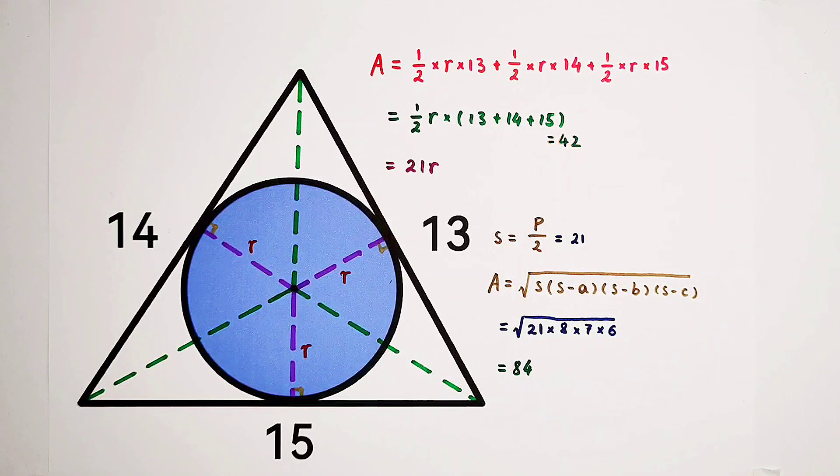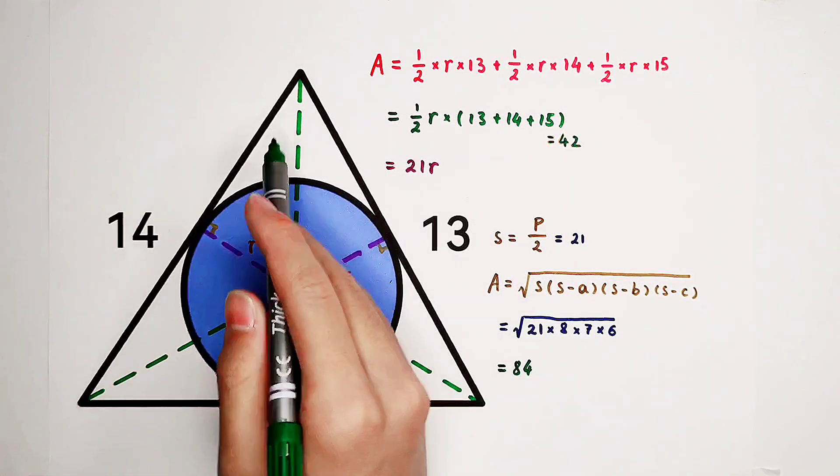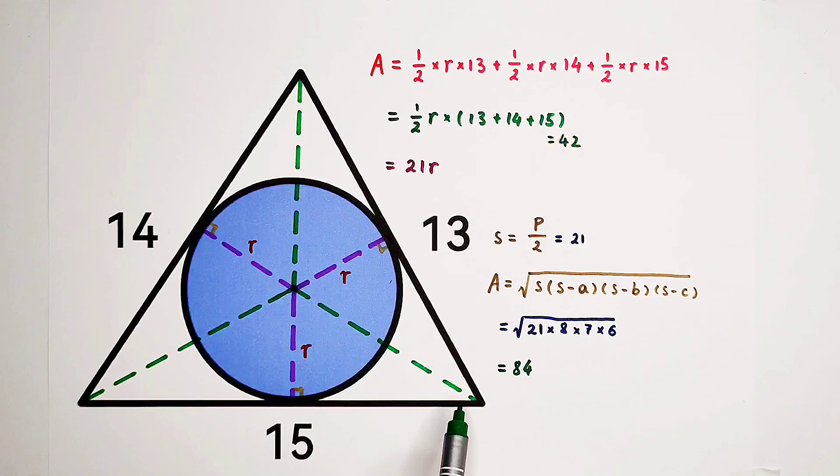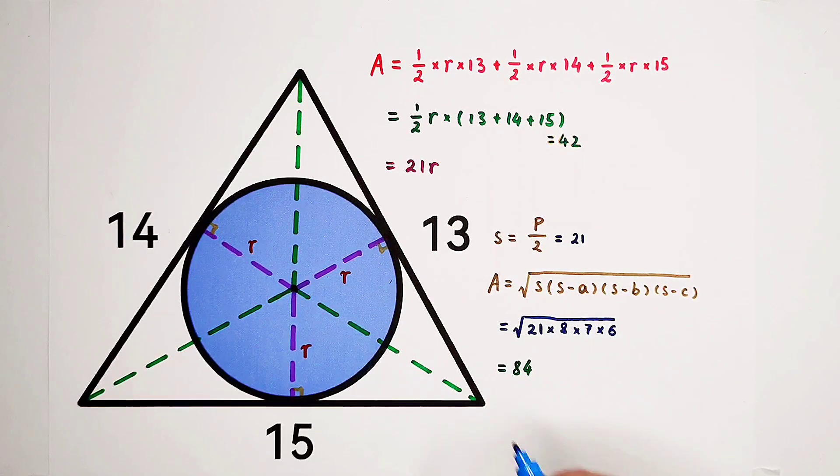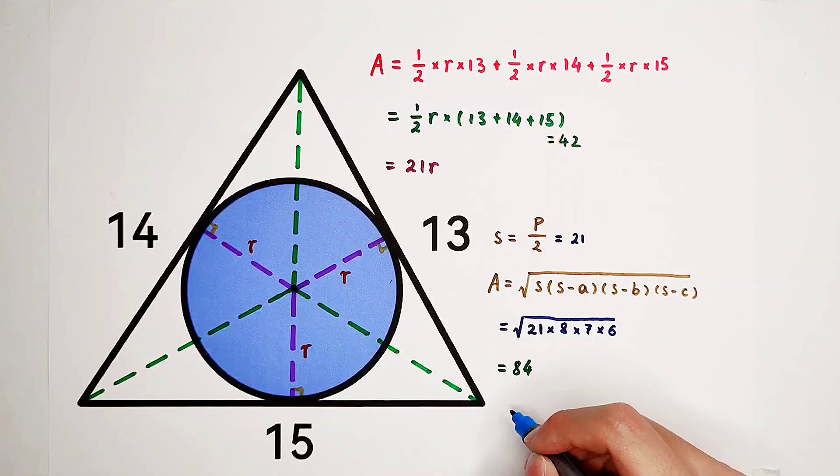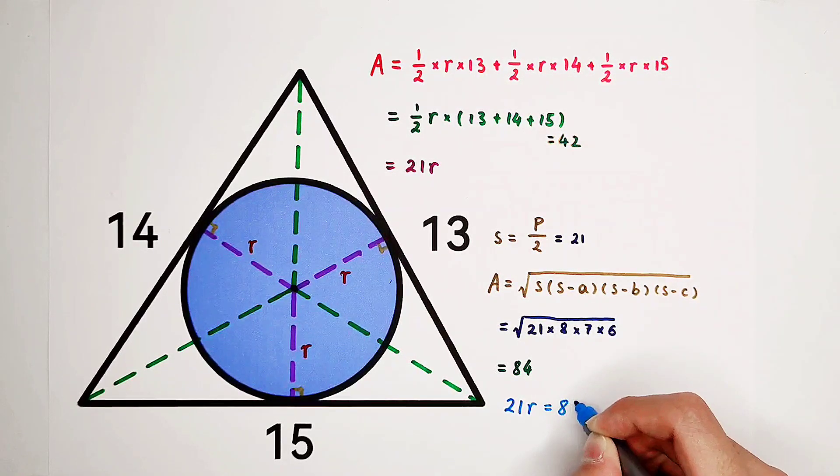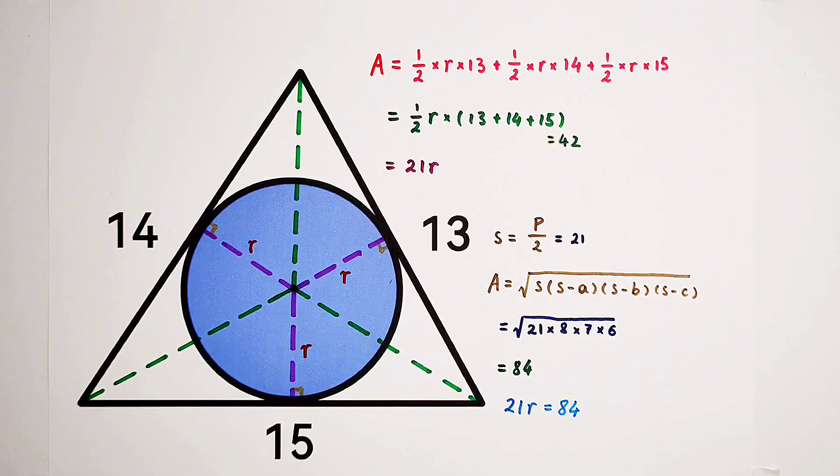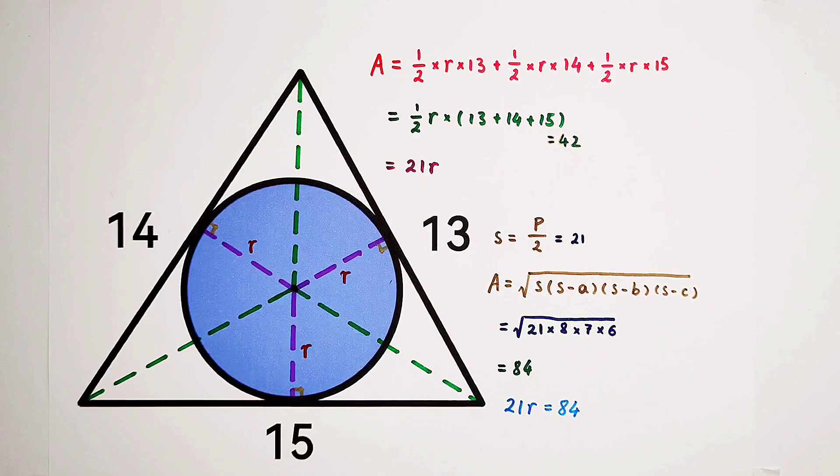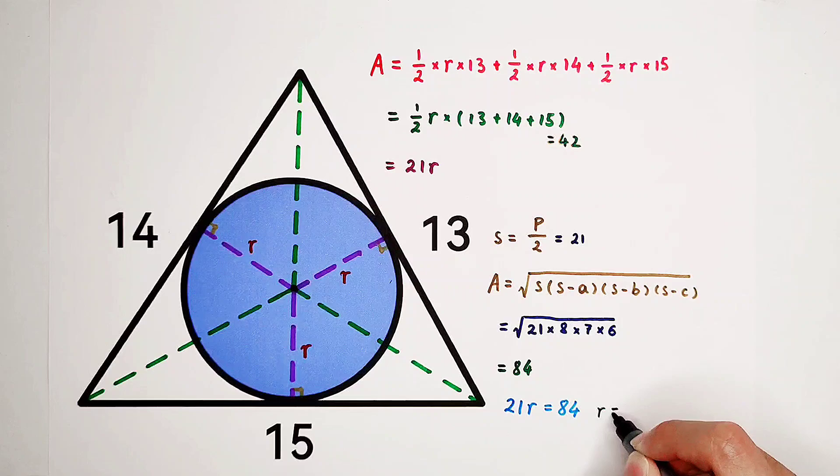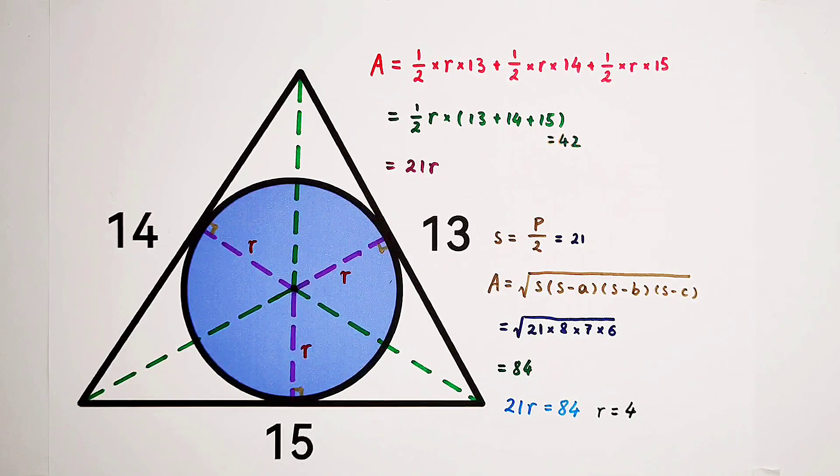So 21R and 84 are both equal to the area of the big triangle. That means we can get an equation. This equation is 21R equals 84. R is 4. So the radius of the circle is 4.